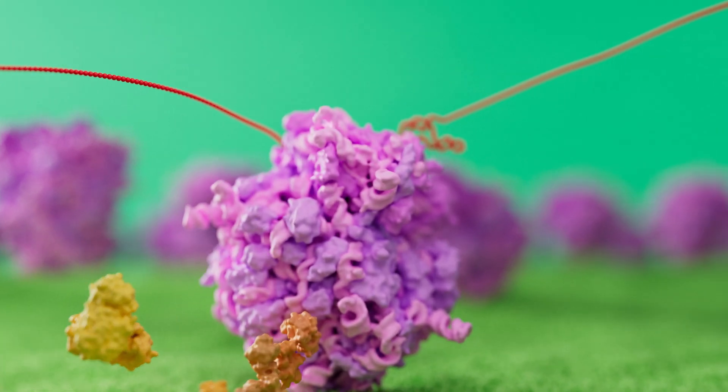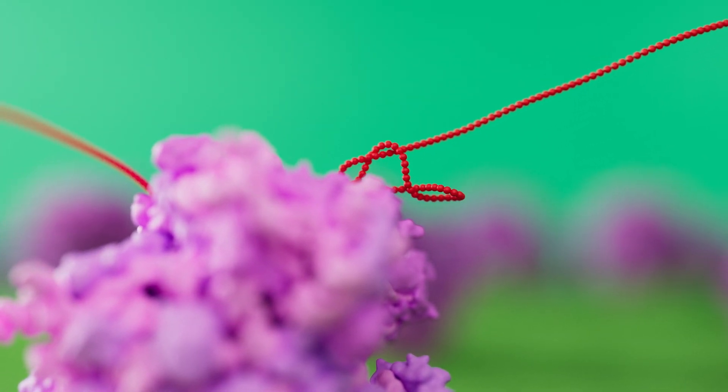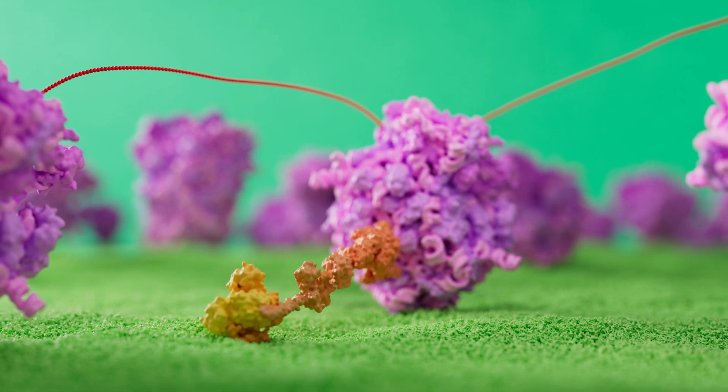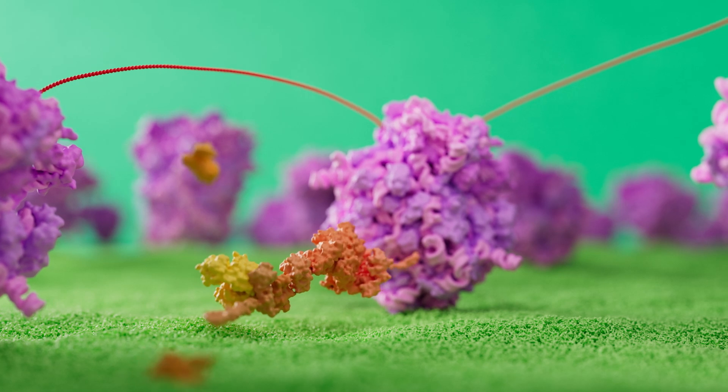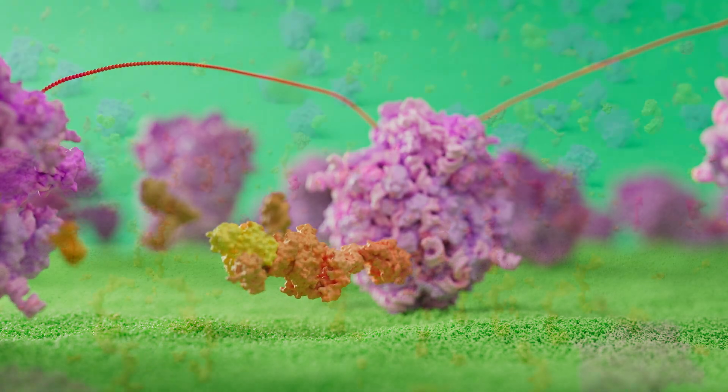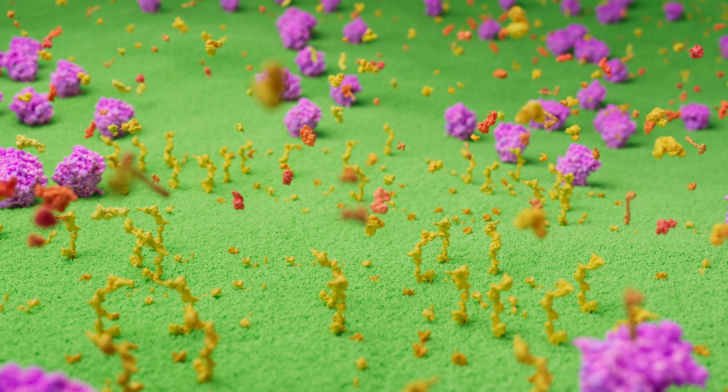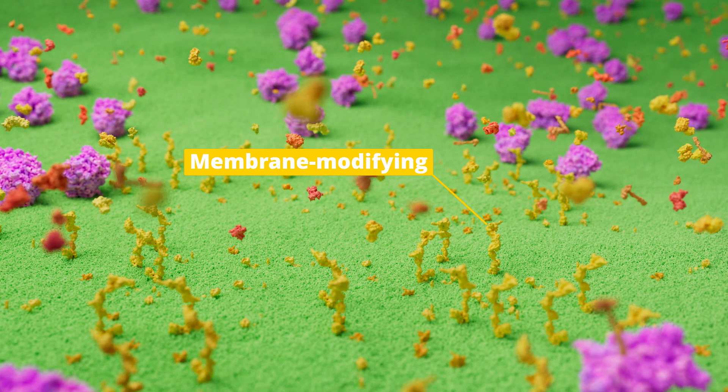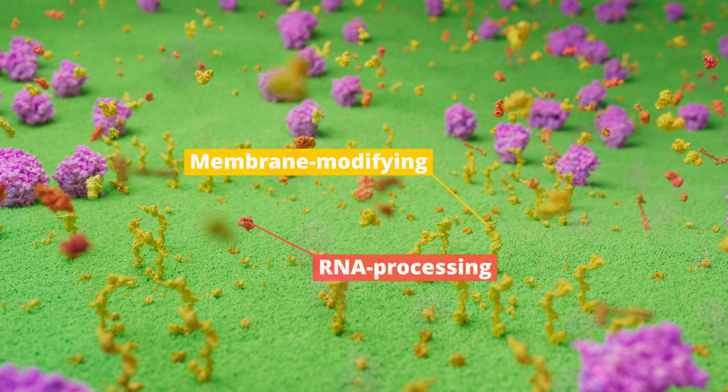The protein production can either stop here, or the knot in the viral RNA can slip, allowing the remaining viral RNA to be read. Because of the knot, the translation of the viral RNA often stops prematurely. This is an ingenious way for the virus to control how many proteins are being made. More of the membrane-modifying NSPs from before the knot, and fewer of the RNA-processing NSPs from after the knot.